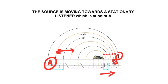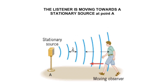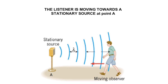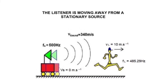You can see from this example that it is the sound source that is moving. What about a case where the listener is moving? Here we have the listener moving towards a stationary source at point A. When the listener is moving towards a stationary source, the wavelength becomes shorter and the frequency is higher. And lastly, when the listener is moving away from the stationary source, the wavelength becomes longer and the frequency becomes lower.